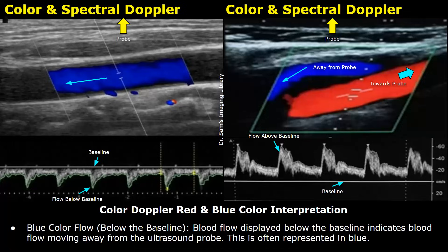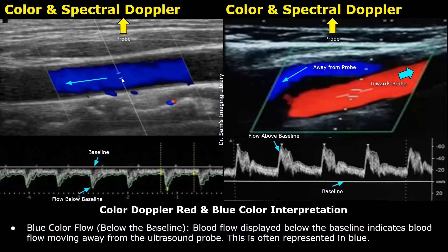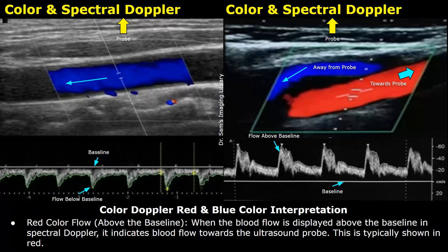Now we will look at how the blood flow seen on color Doppler appears on spectral Doppler. This is the spectral Doppler waveform — the horizontal line representing zero velocity is the baseline. By default, red color flow is always seen above the baseline and blue color flow is seen below the baseline. In the first image, the sample volume is placed inside the blue vessel, and the waveform appears below the baseline. In the second image, the sample volume is placed inside the red vessel, and the waveform appears above the baseline.